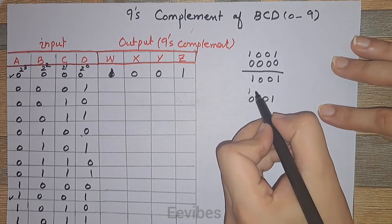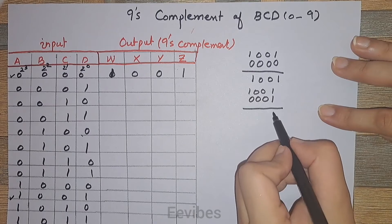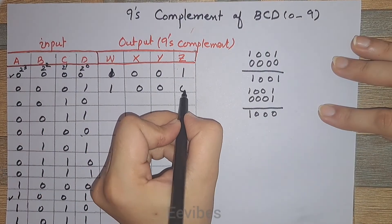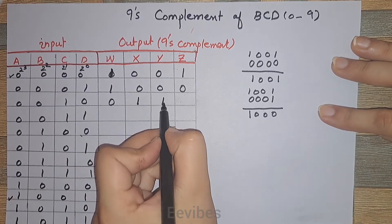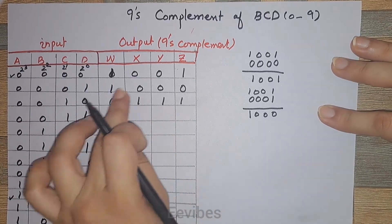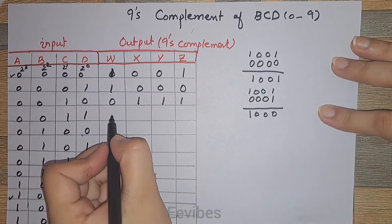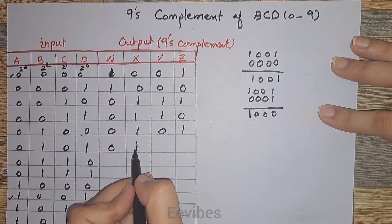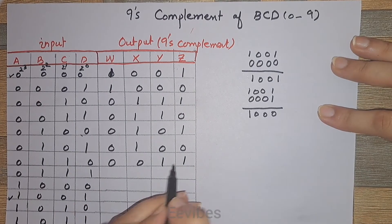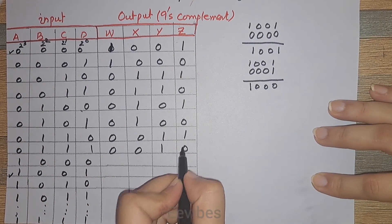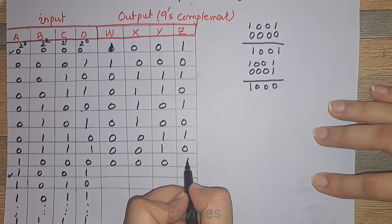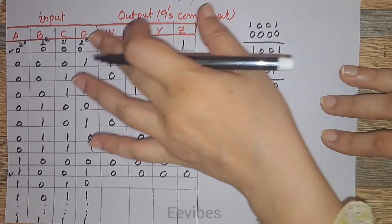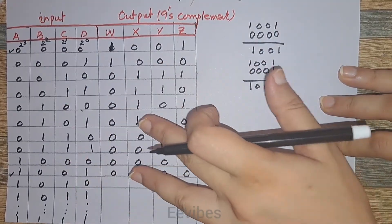Similarly, for the 9's complement of 1, we take 0001 and subtract it from 9, giving 1000, which equals 8. Then 9 minus 2 gives 7, 9 minus 3 gives 6 (0110), then 5 (0101), then 4, then 3, 2, 1, and finally the 9's complement of 9 is equal to 0, since 9 minus 9 equals 0.